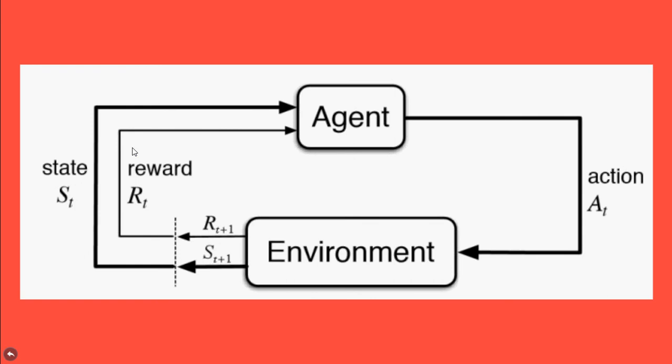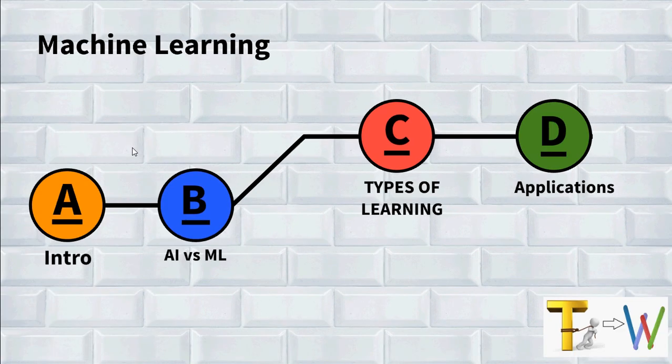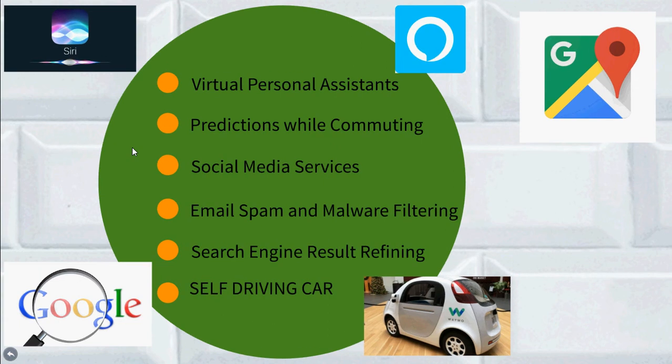Now let's dive into the applications where machine learning is being used currently. First of all, the virtual personal assistants. Siri, Alexa, Google are some of the most popular virtual personal assistants. As the name suggests, they assist in finding information when asked over voice. We can even instruct for assistance for certain tasks like set an alarm for 6 AM or setting a reminder and many more.